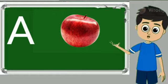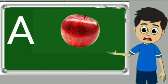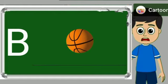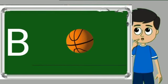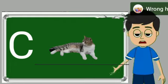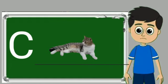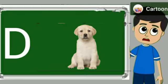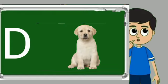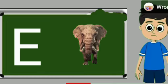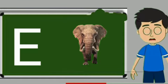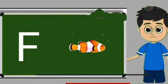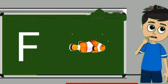A for apple. Apple means save. B for ball. Ball means gain. C for cat. Cat means billy. D for dog. Dog means kutta. E for elephant. Elephant means hathi. F for fish. Fish means machli.